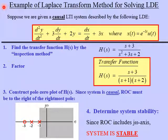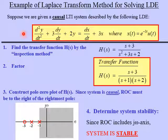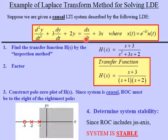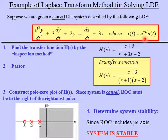Let's start with an example. Suppose we're given that a causal LTI system is described by the following linear differential equation: the second derivative of y plus three times the first derivative of y, dy/dt, plus 2y equals dx/dt plus 3x. We're also given the input function x(t) is e to the minus 3t times the step function u(t).